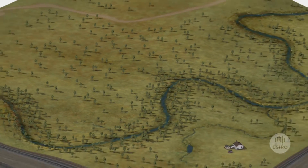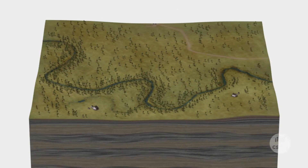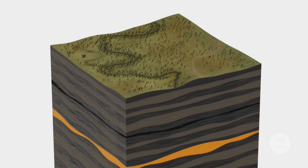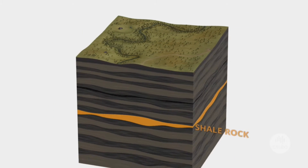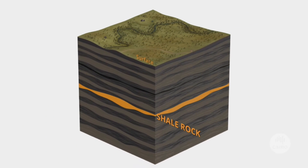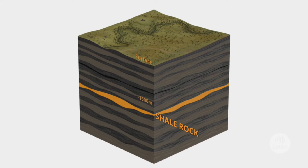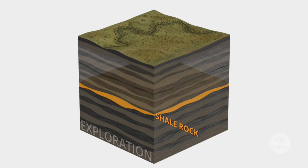Shale gas is mainly methane trapped within shale rock layers at depths greater than 1,500 metres. Australia's shale gas industry is largely in the exploration phase.